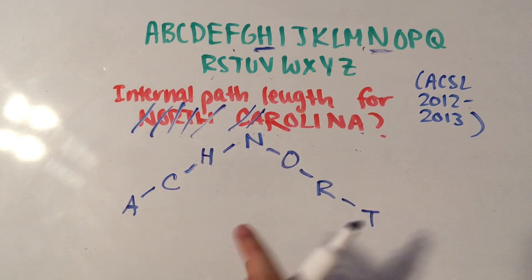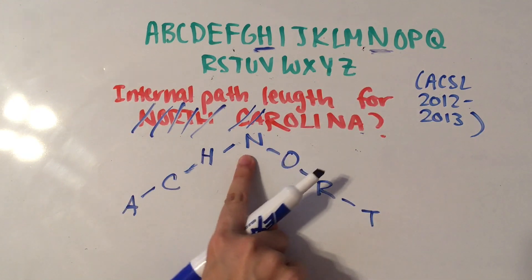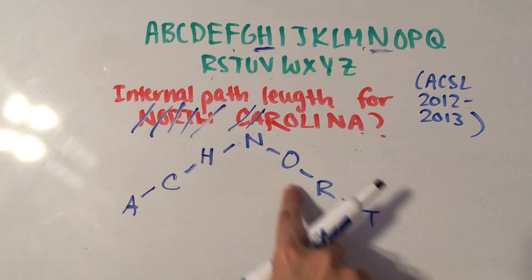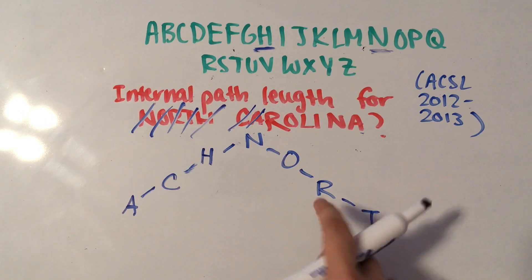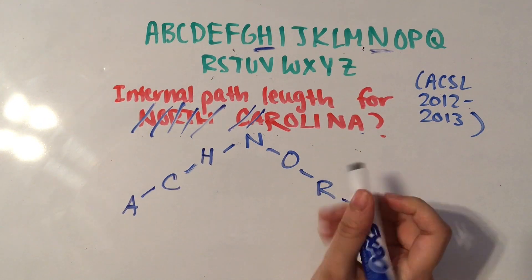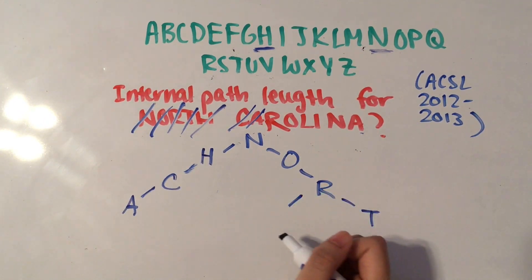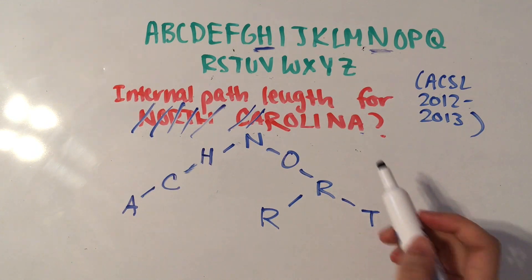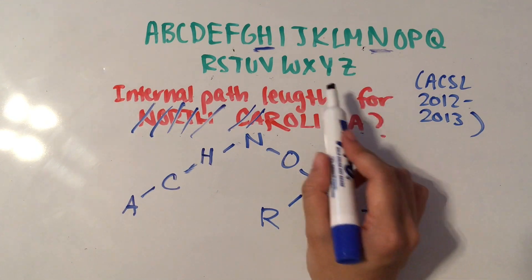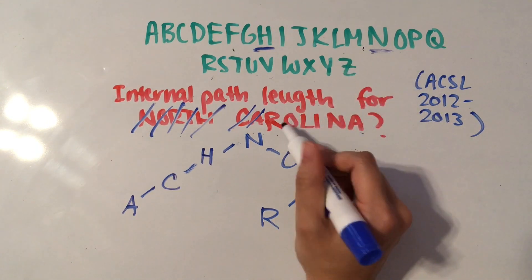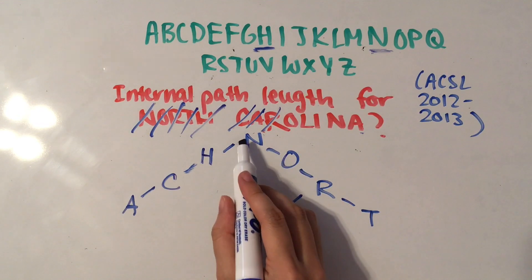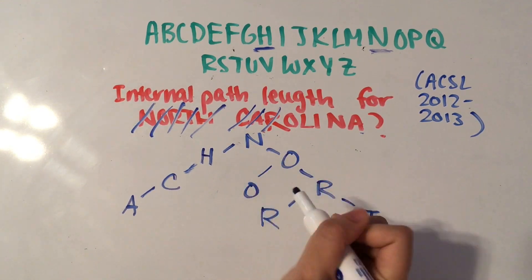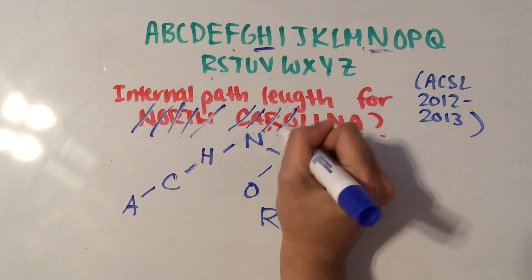Then we have R. Starting here, we see that R is after N and after O, but it's the same letter as the other R, so we're just going to put it there. And then we have O which also comes after N and is the same letter as O, so there you go.